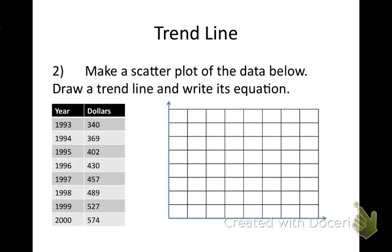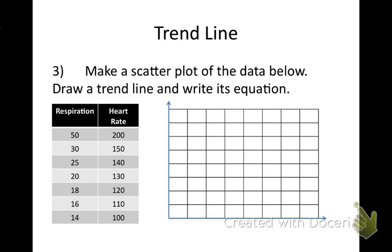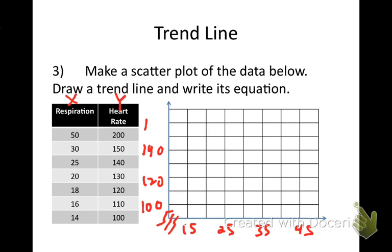I'm going to skip that one because of the high numbers and do the next example, which has smaller, easier numbers. Same steps: make a scatter plot, draw a trend line, write its equation. For the x-axis, I start at 15 and go by fives — 15, 25, 35, 45. For the y-axis, I start at 100 and go by tens — 100, 110, 120, 130, 140, 150, 160, 170, 180 — though I might need to go by 20s to fit 200.